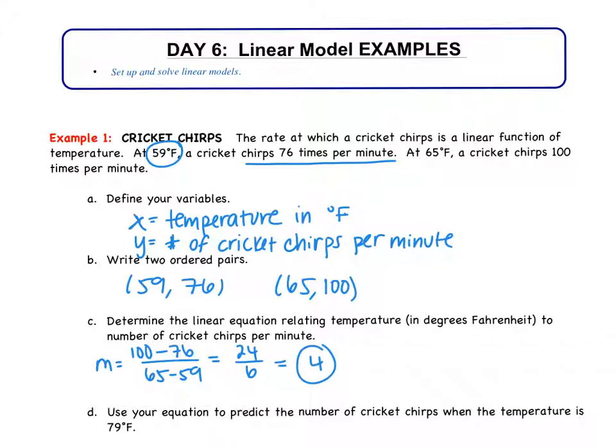Now we need to write the equation of a line. What form are we going to use? Point slope or slope intercept? Point slope. Which point would you guys like to use? The first one or the second one? Second one. Okay, so we're going to do Y minus 100 equals M, which is 4, times X minus 65.